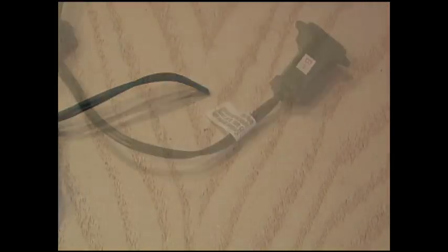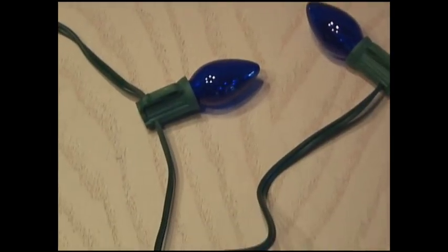Cut off the end that plugs into the wall. And after reading the other warning labels on the other end, cut that end off too. Then we're going to measure out about 10 Christmas lights and cut the wire.